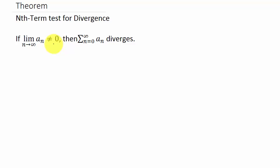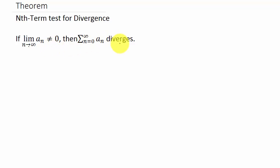That's if the limit does not equal 0. Now, if the limit equals 0, that doesn't mean that the series is going to converge. This theorem, the nth term test for divergence, it only tests to see if the series diverges. So if we take the limit of a sub n as n goes to infinity and that does not equal 0, then we say it diverges. If it equals 0, then we can't come to any conclusion.